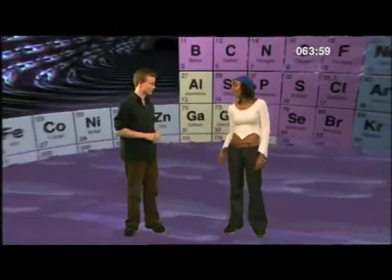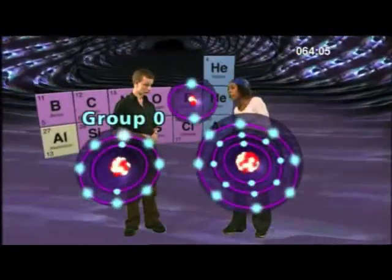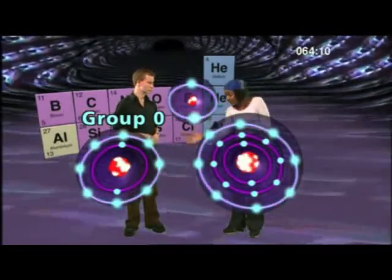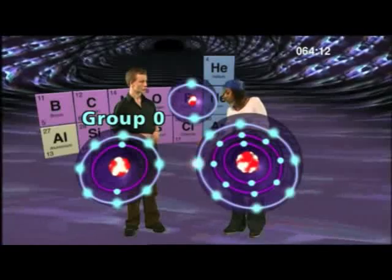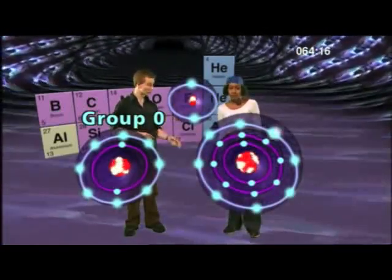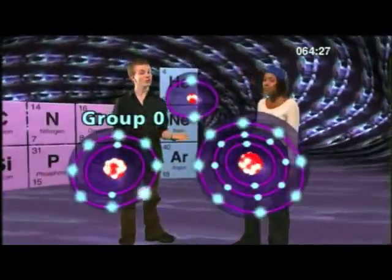Group zero just sounds weird. They can't have zero electrons, can they? Let's take a look at some of the atoms in group zero. All the atoms in this group have an outer shell which is completely filled up with electrons. Helium has two electrons in its outer shell, and neon and argon both have eight electrons in their outer shells. Because they have outer shells which are completely filled up with electrons, this means that they do not react with any other chemicals.